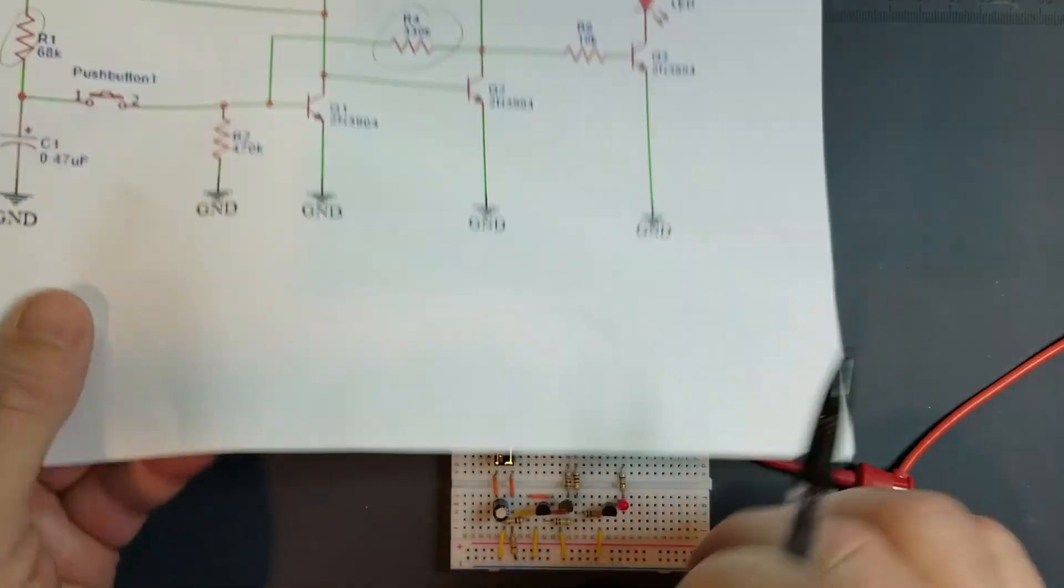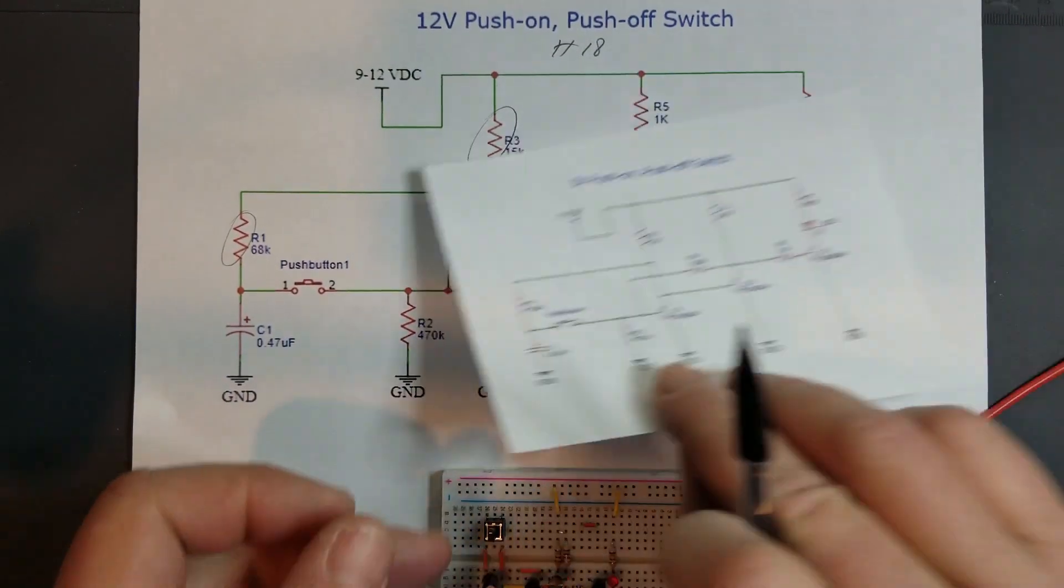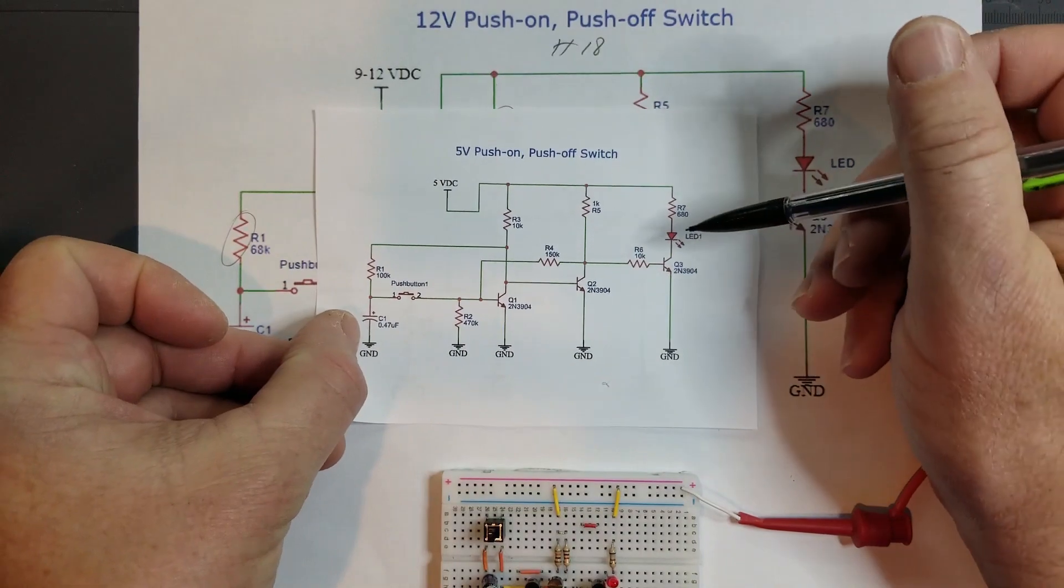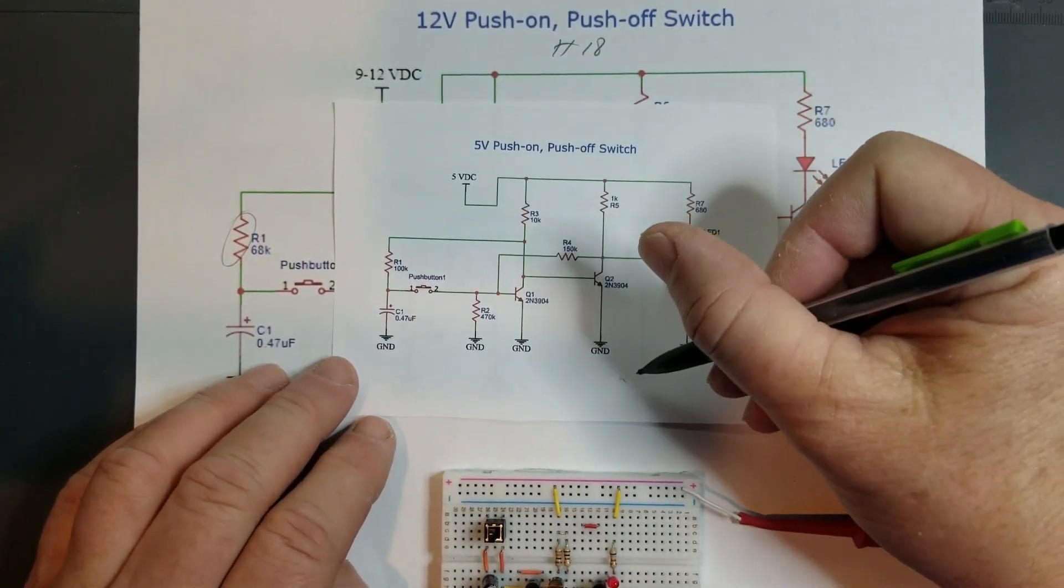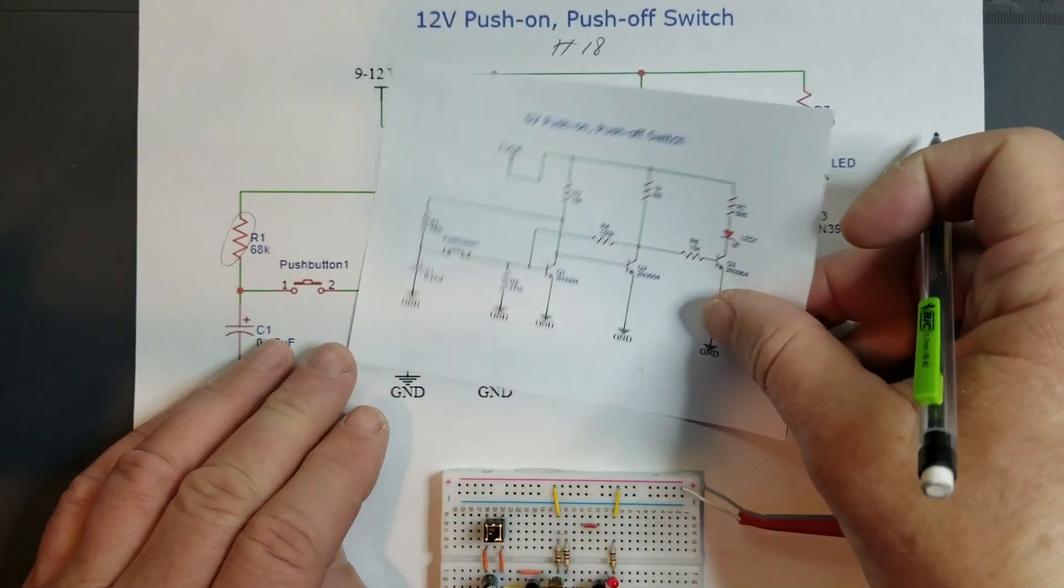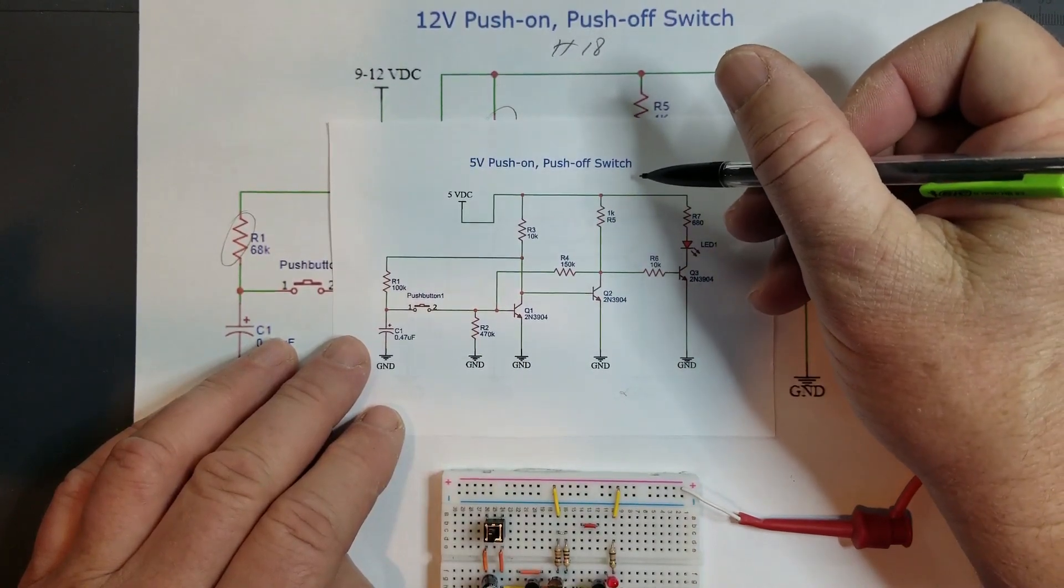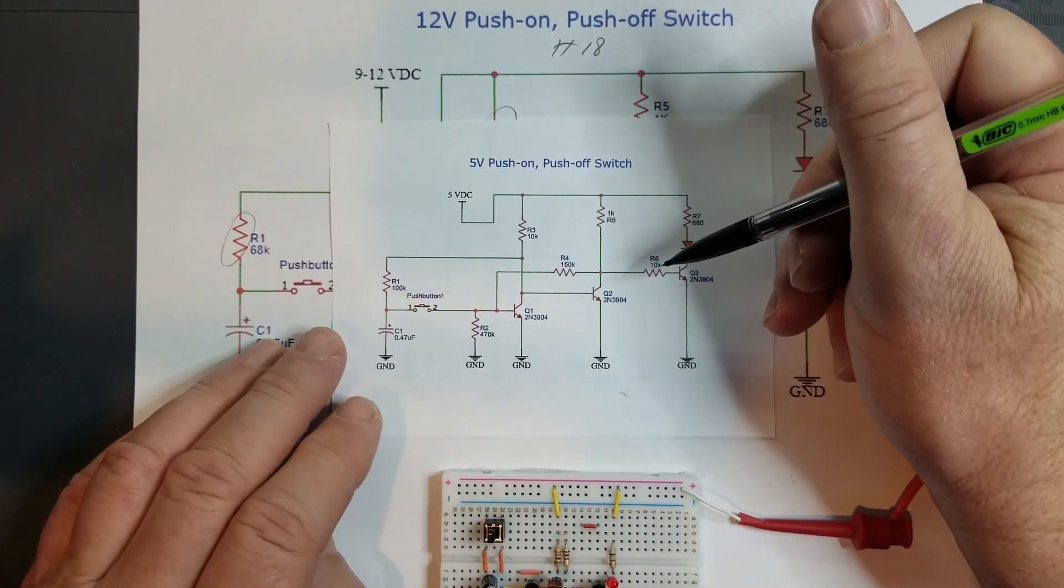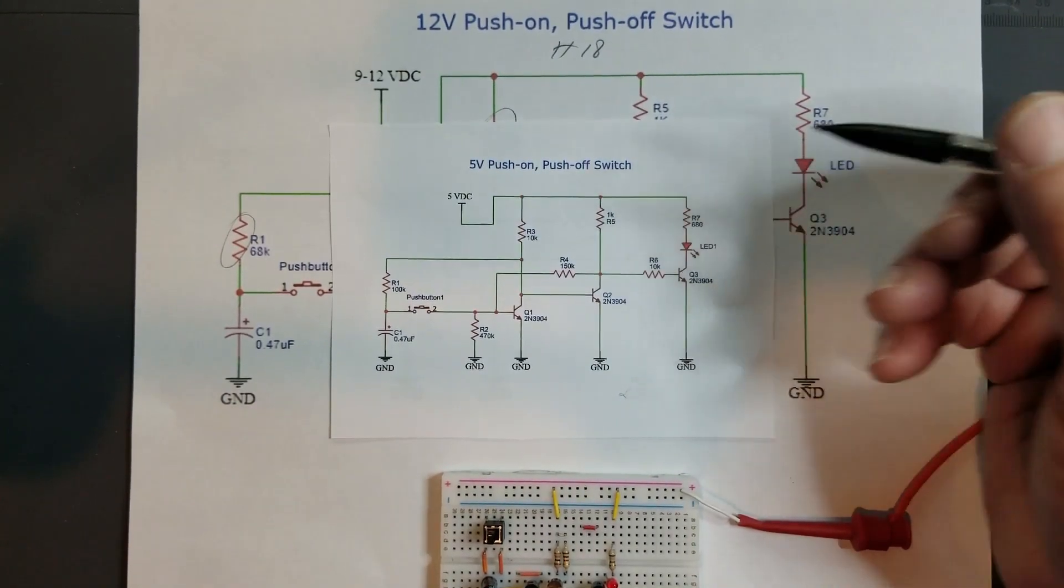This is the original circuit here. This 5 volt version was developed upon request from one of my viewers who wanted to take the 12 volt version and reduce the voltage down to 5 volts.